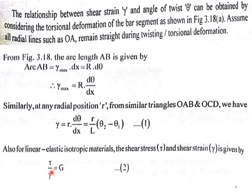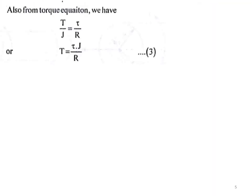Also, for linear elastic isotropic materials, the shear stress tau and shear strain gamma is given by tau by gamma is equal to G. Also from the basic torque equation we know that T by J is equal to tau by r, or further it is written as T is equal to tau into J by r, equation number 3.